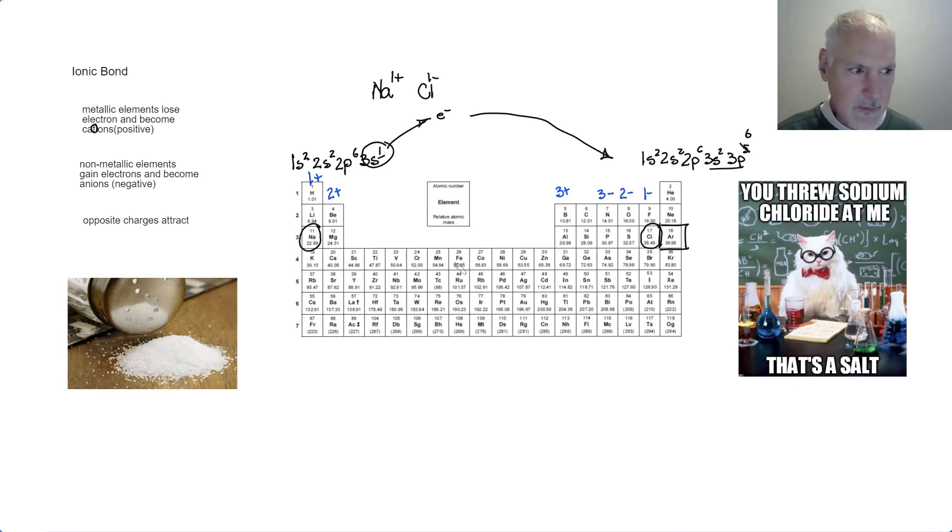Now, what about these elements in the middle, the transition metals? Well, as mentioned, metals tend to lose electrons. What's different about these particular elements is they can lose more than just one particular number of electrons. Let's look briefly at iron for a moment.